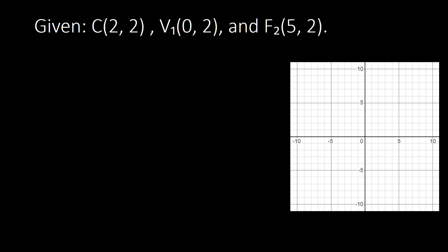We start by plotting our center at (2, 2). Then we have vertex 1 at (0, 2), and our focus at (5, 2). Once we have plotted these points, we can identify the orientation. Based on what we can see on the graph, the orientation is horizontal.